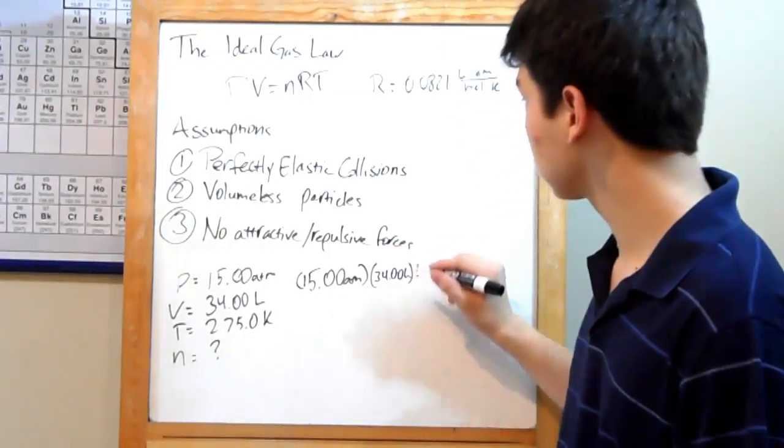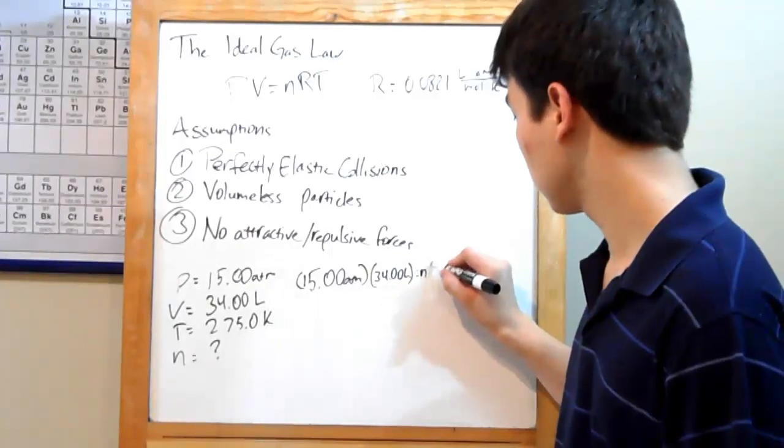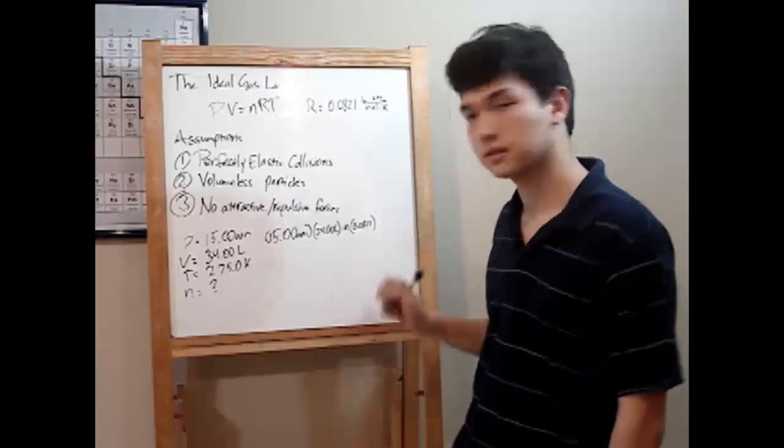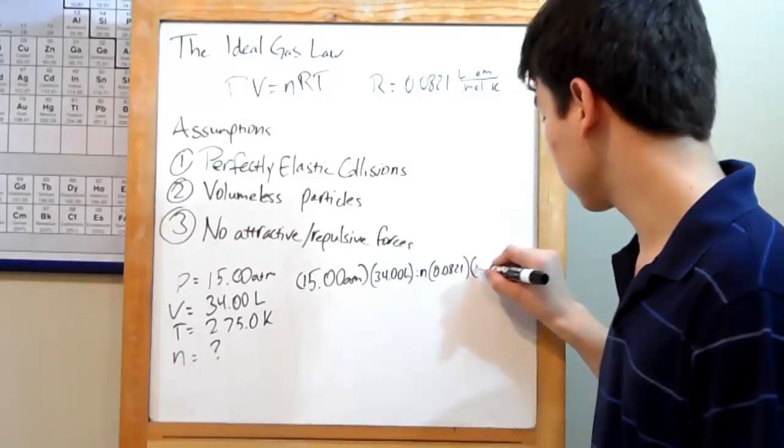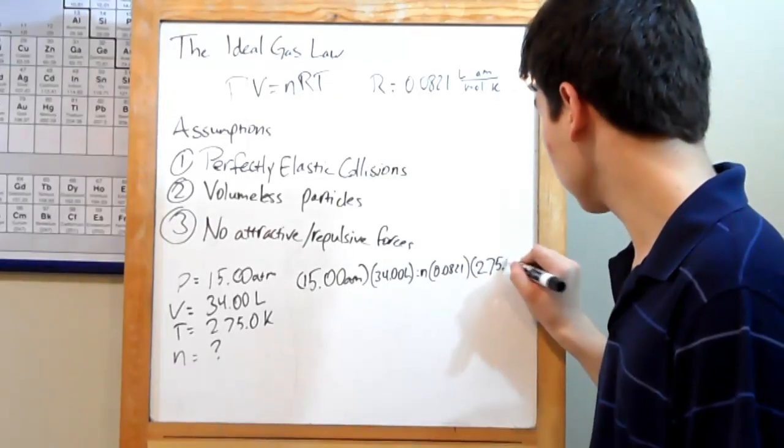Equals n, unknown. R, 0.0821. I'm not going to write the units in since all you need to know is that they all cancel out. And temperature, 275.0 K.